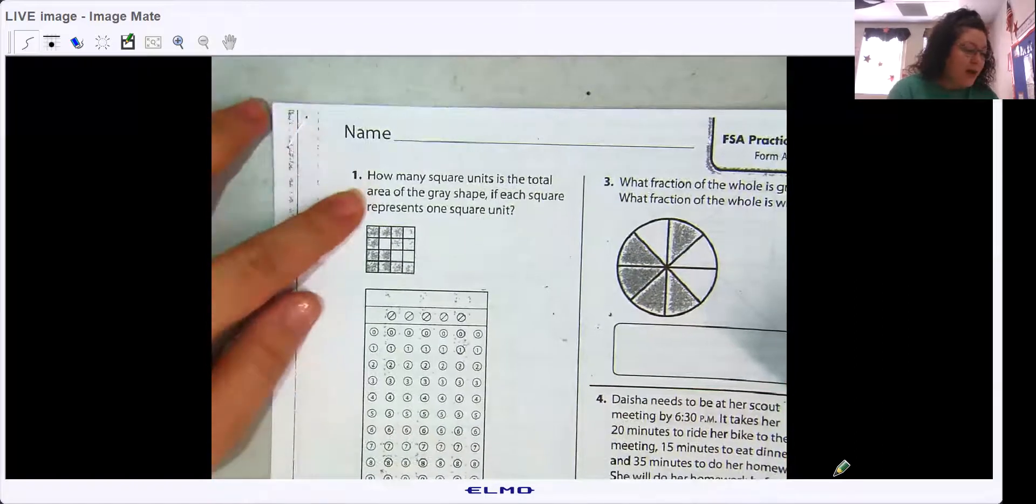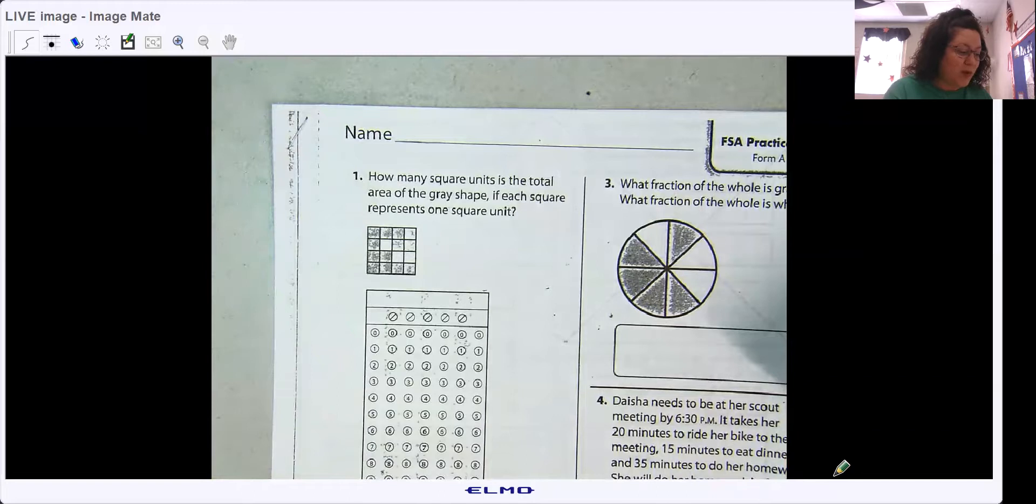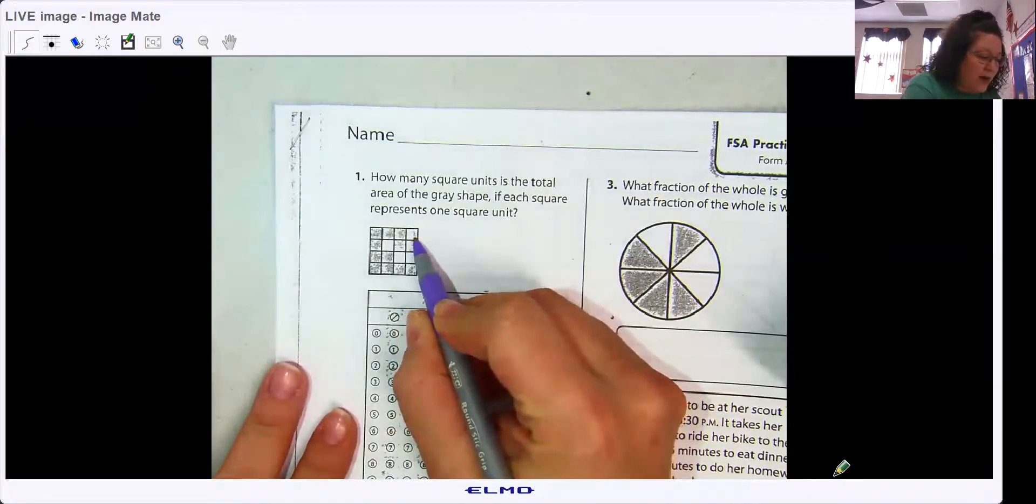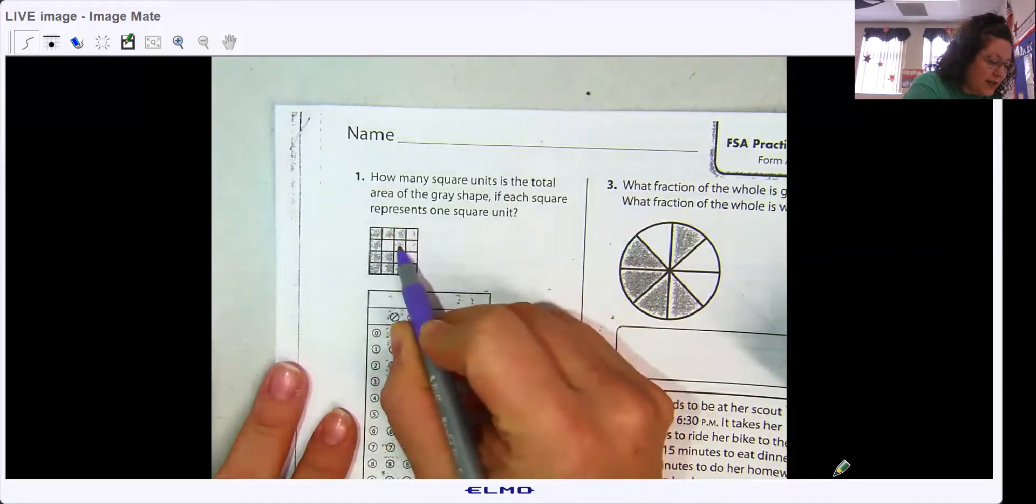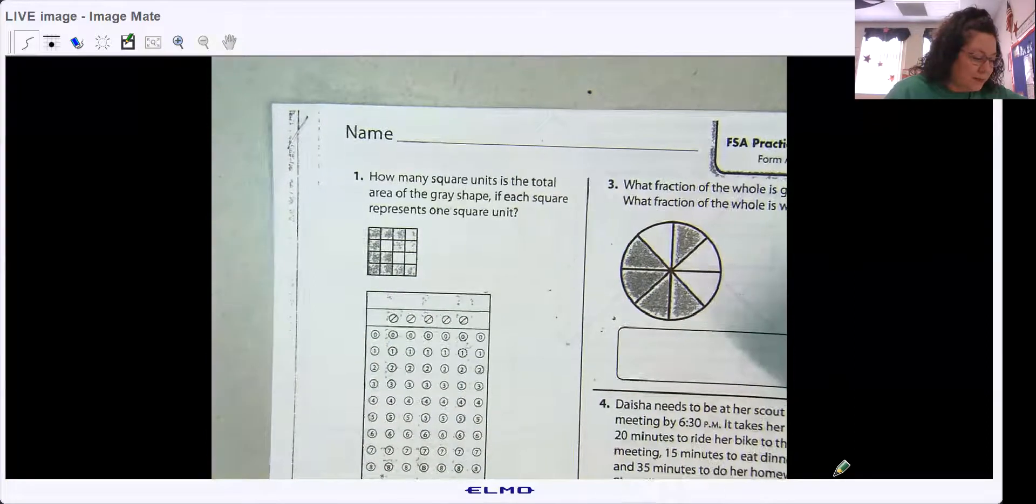How many square units is the total area of the gray shape if each square represents one square unit? I know it's kind of hard to see, but let's see, I see gray here. One, two, three, four, five, six, seven, eight, nine, ten, eleven, twelve. We'll just say 13. Okay.